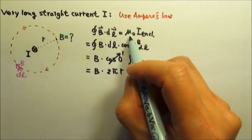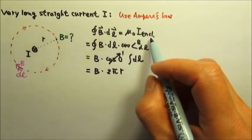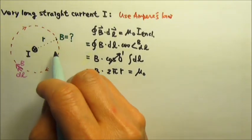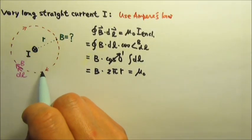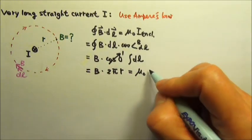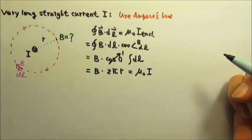And we know this integral should equal μ₀ times i enclosed. So this should equal μ₀. How much current is inside this Ampere's loop? It is i, so the enclosed current is i.